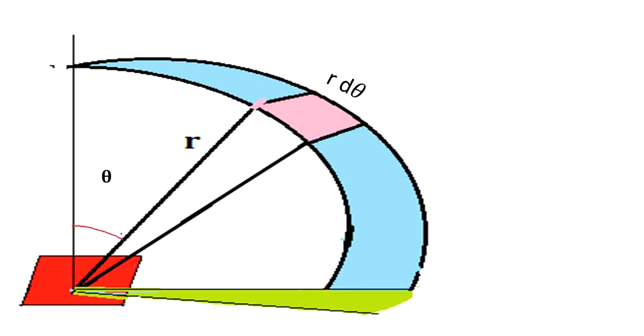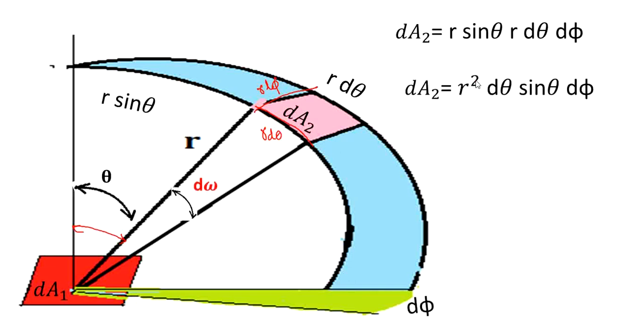Some strip you have to maintain, the strip at theta, maintaining radius r. And then this is what I call as r d theta. This is r d phi.